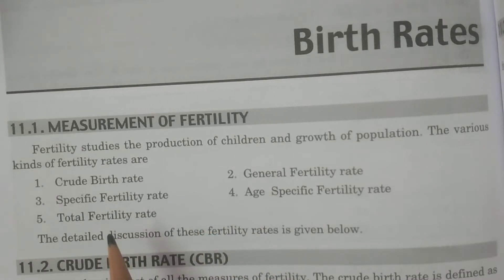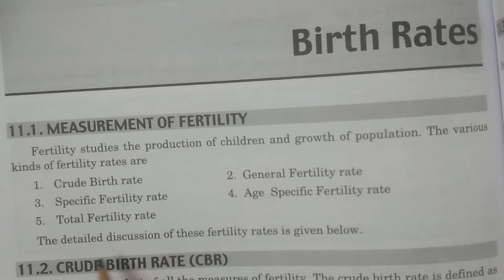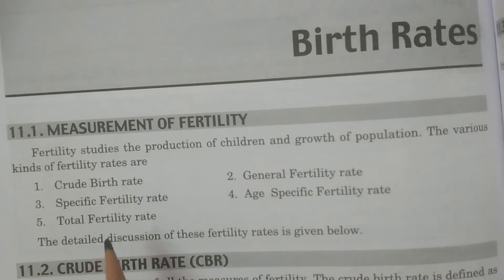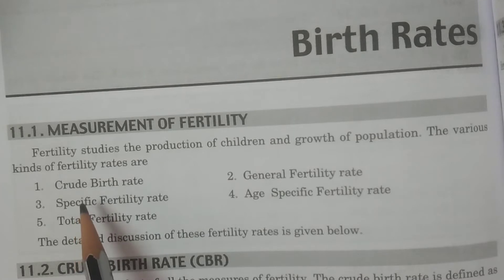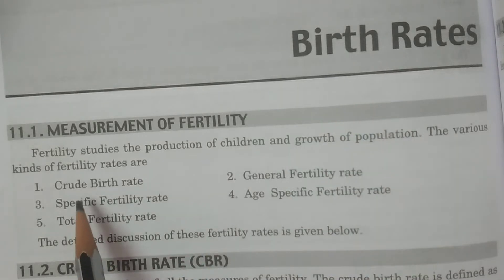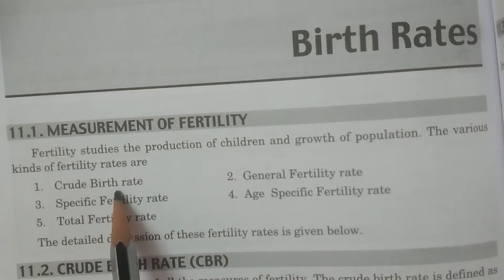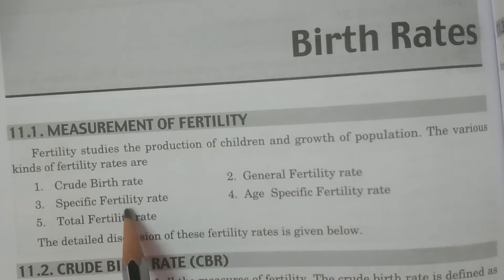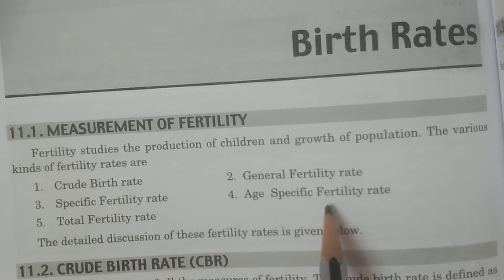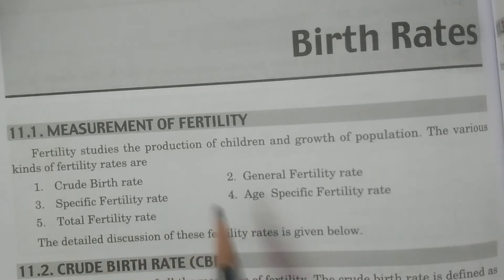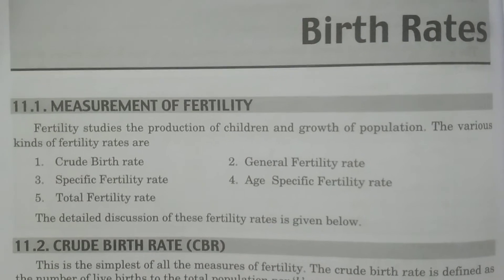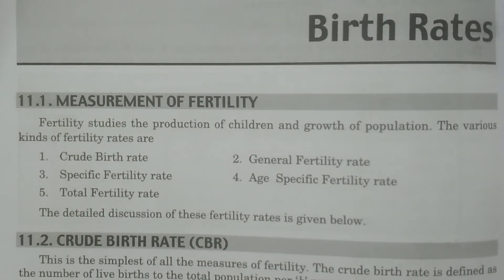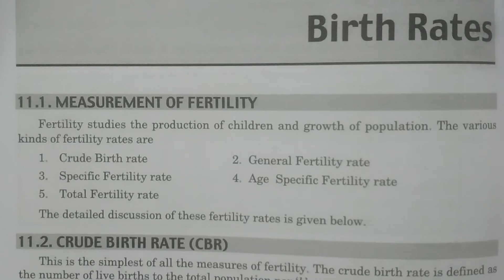In general there are five fertility rates we use to measure fertility, which are also known as birth rates. The five measures are: Crude Birth Rate (CBR), General Fertility Rate (GFR), Specific Fertility Rate (SFR), Age-Specific Fertility Rate (Age-SFR), and Total Fertility Rate (TFR). These five are collectively called fertility rates or birth rates.